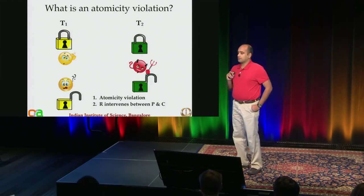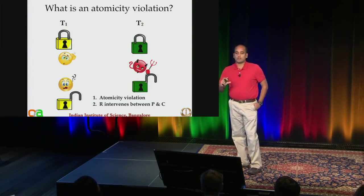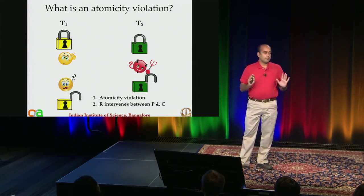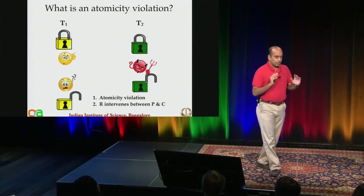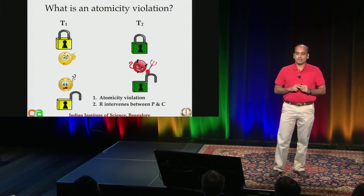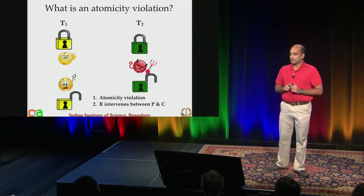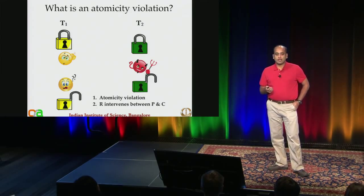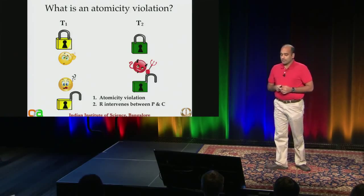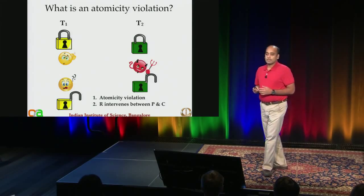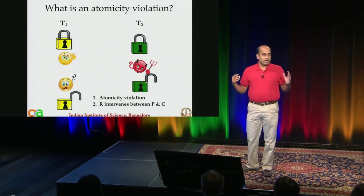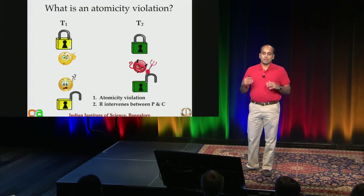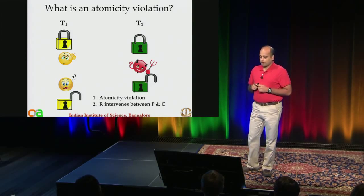You can think of just wrapping things with locks and assuming it is safe, but in many cases it won't be. If you find a scenario where the lock objects are different — represented by different colors, yellow and green — you still have an atomicity violation. You have different locks, and the interleaving causes a problem.